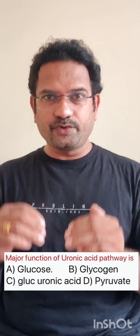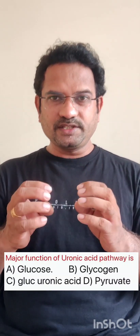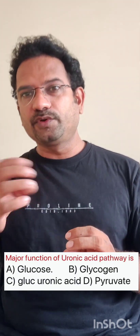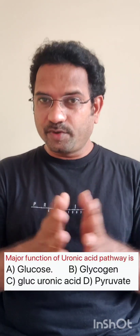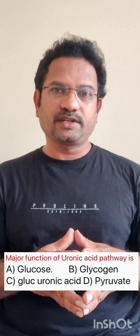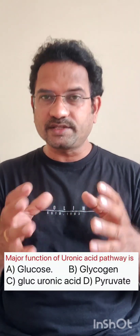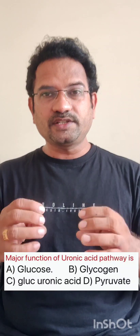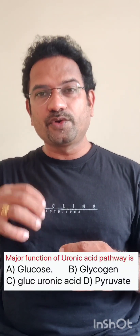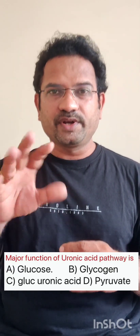The last question: uronic acid — the main function of the uronic acid pathway is? The uronic acid pathway produces glucuronate. This is a very important molecule used in detoxifying reactions. In phase 2 metabolism, glucuronic acid is involved, and this glucuronic acid is produced in the uronic acid pathway. So the answer is: producing glucuronic acid is the major function of the uronic acid pathway.